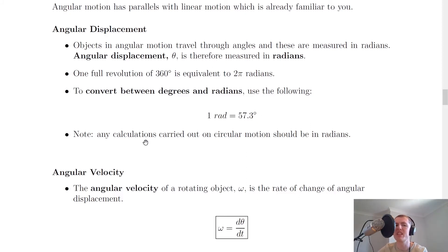The last thing to note here is that any calculations carried out in circular motion should be in radians. So if you're doing calculations in circular motion make sure that your calculator is set to radians mode rather than degrees mode to ensure that you get the answers right.